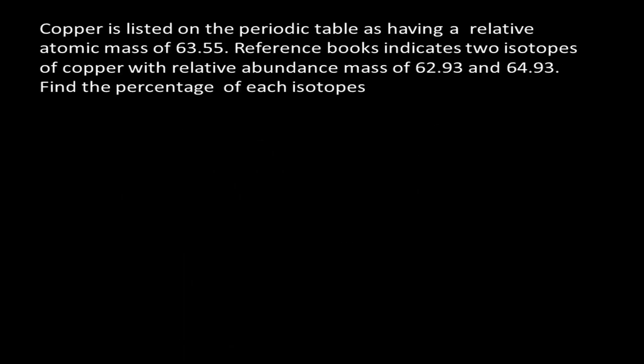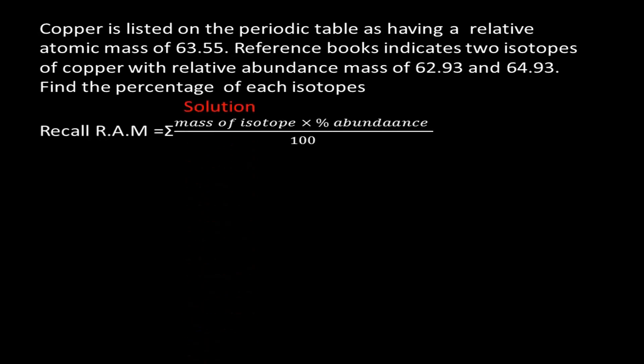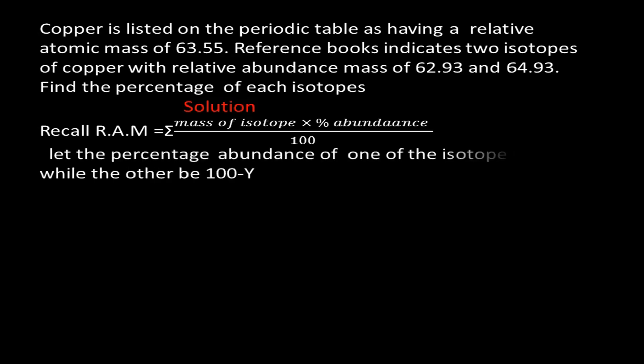Example 2: Copper is listed on the periodic table with a relative atomic mass of 63.55. Reference books indicate two isotopes of copper with relative abundance masses of 62.93 and 64.93. Find the percentage of each isotope. Solution: Let the percentage abundance of the first isotope be Y; then the other is (100 − Y), since the total percentage is 100.